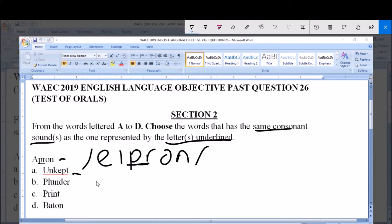Option A, unkept is transcribed this way. Option B, plunder, is transcribed this way. Option C, print, is transcribed this way.